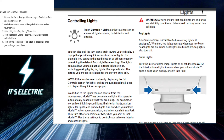Under the controls menu, tap the lights option. This section gives you access to all lighting features, including your headlights, high beams, and of course the fog lights.